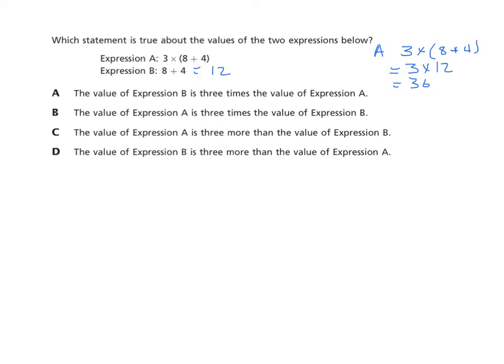Let's look at our choices. We have: the value of B is eight times the value of expression A; the value of expression A is three times the value of expression B; and C, the value of A is three more than the value of expression B. These can easily be checked since we've evaluated both expressions. Let's go through them and talk about which one is right.